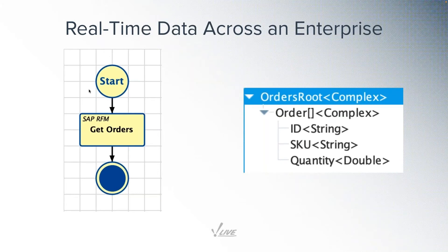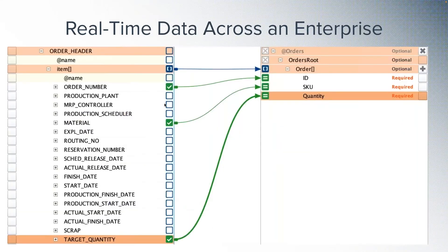Looking at the screenshots, we've created a simple piece of logic that calls a native SAP function to get a list of production orders that meet certain criteria — filtering by plants or by a range of order numbers. On the right, we've defined a simple structure called a parameter containing just the information we care about. Using the Business Connector, we create a simple mapping that stores the relevant fields from the SAP function — the order ID, the SKU, and the quantity — in a very simple one-to-one mapping.